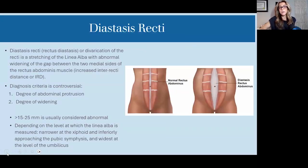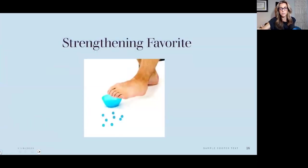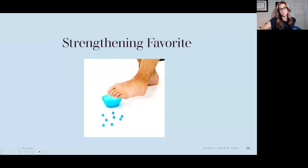Moving on — diastasis recti. That is basically the stretching of the linea alba, which is the connective tissue along your abdomen, or the abnormal widening of the gap between the two inside portions of the rectus abdominis — your six-pack muscle. There's a pretty controversial diagnosis going on, but it's usually pretty obvious when you see it — there is that widening.